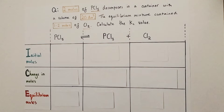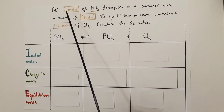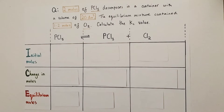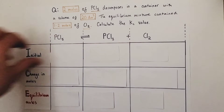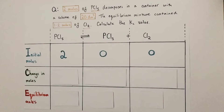Next we come to the I in the ICE method — that's the initial moles. We simply record how many moles of each substance we have information about from the question. We've been told we have two moles of PCl5 at the start. We've been told nothing about PCl3 or Cl2, so both of these we assume are zero. These are our initial moles at the start of the reaction.